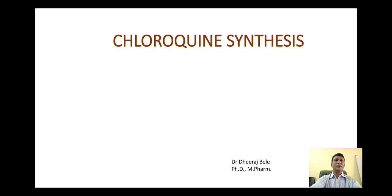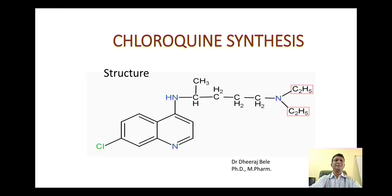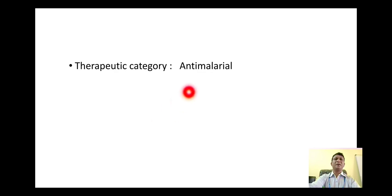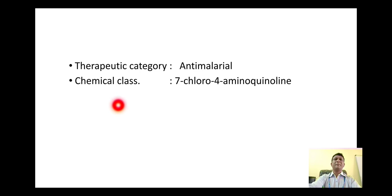Let's look at the topic of synthesis of chloroquine. This is the structure of chloroquine. From the name you can guess some structural features: 'chloro' stands for the presence of chlorine, while 'quine' stands for the presence of the heterocyclic ring quinoline. This compound belongs to the therapeutic category of anti-malarial drugs. Its chemical class is 7-chloro-4-aminoquinoline.